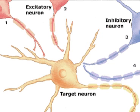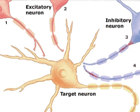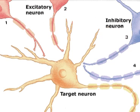The terminal bouton of neuron 4 synapses on the terminal bouton of neuron 3. This type of synapse is termed axoaxonic. The action potential arriving at terminal bouton 4 leads to an inhibitory postsynaptic potential in axon 3. The action potential moving down axon 3 reaches the hyperpolarized area and dissipates, preventing the release of neurotransmitter from the terminal bouton of neuron 3 to the target cell.